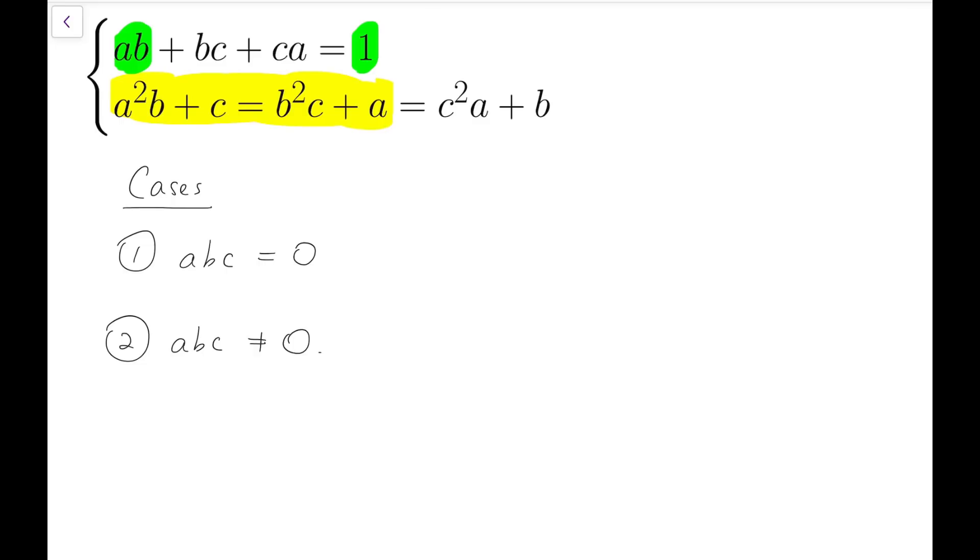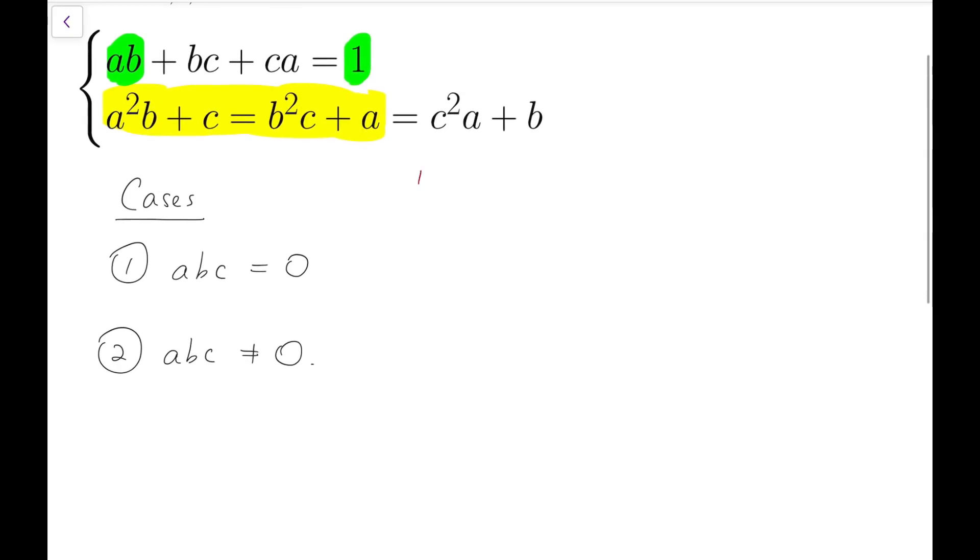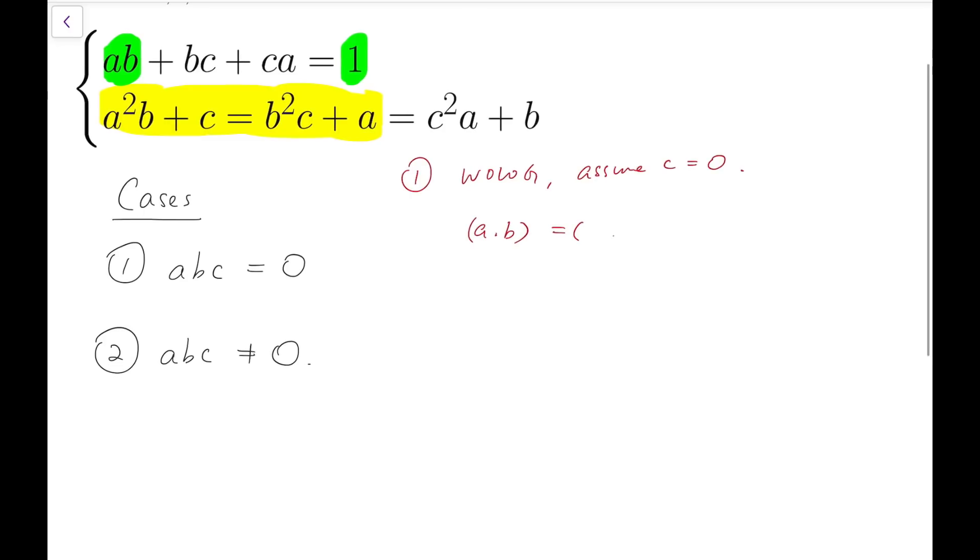Now for the first case, we've actually demonstrated just now. Without loss of generality, because this expression is actually cyclic, assume c equals 0, then we'll get a, b to be either both 1 or both -1.